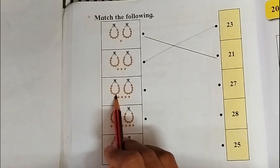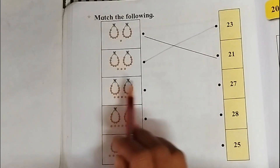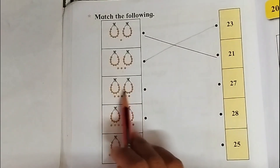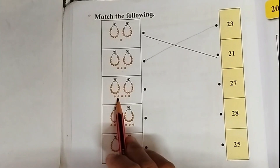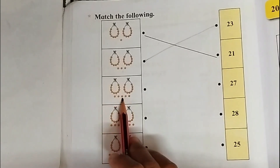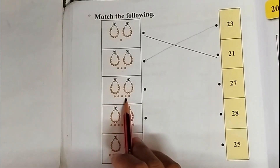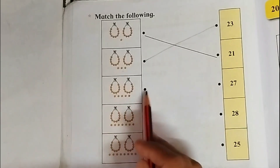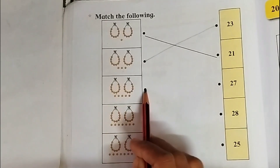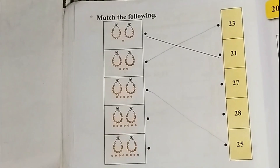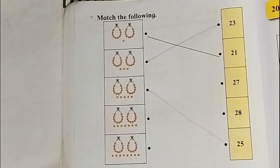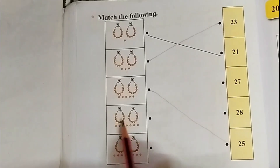One necklace has 10 beads, the other also has 10. So 10, 20, then count on: 21, 22, 23, 24, 25. Where can you see 25? You will match it over here.